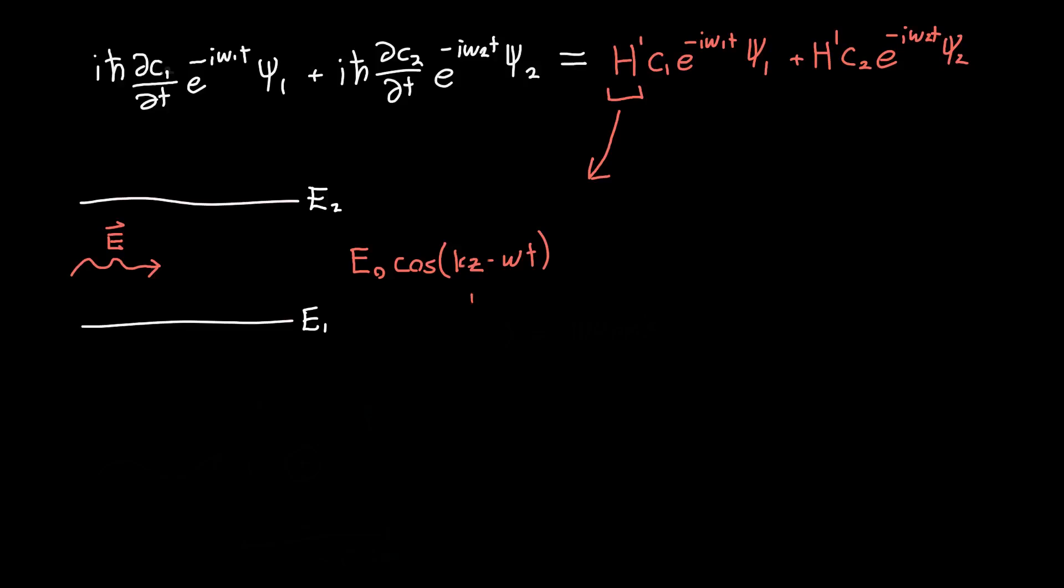You might ask why this has to be z. And it doesn't have to be z, it could also be y. But we want our electric field to have some x component. So we want these wave functions we said were functions of x, and so we want our electric field to have some x component so that it interacts with the wave functions.